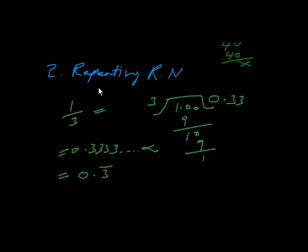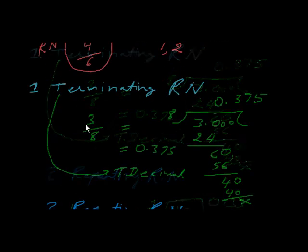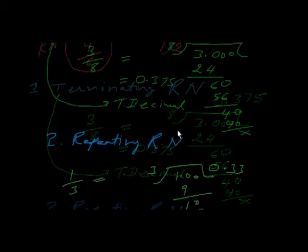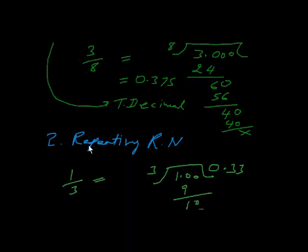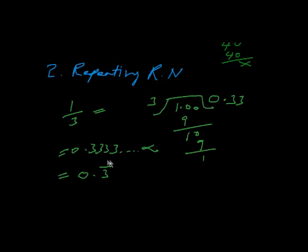Okay, these are the two main types. One is terminating and next is non-terminating and repeating rational numbers. Thank you very much.